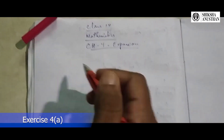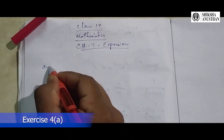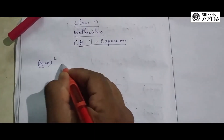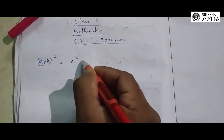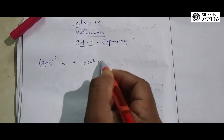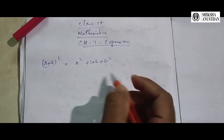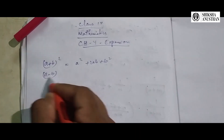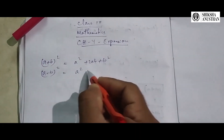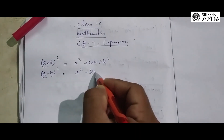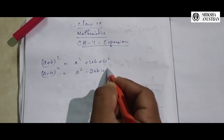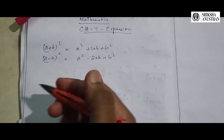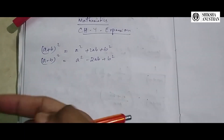Starting with the formulas: the first formula is (a + b) whole square, which equals a square plus 2ab plus b square. Then (a - b) whole square equals a square minus 2ab plus b square.